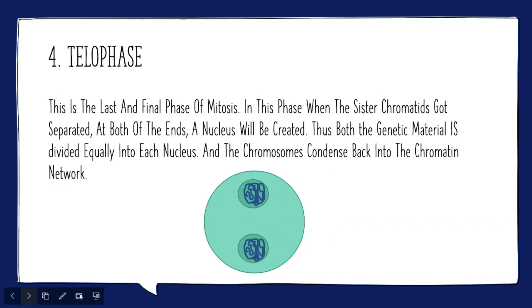Telophase. This is the last and final phase of mitosis. In this phase when the sister chromatids got separated at both of the ends a nucleus will be created. Thus both the genetic material is divided equally into each nucleus and the chromosome condense back into the chromatin network.